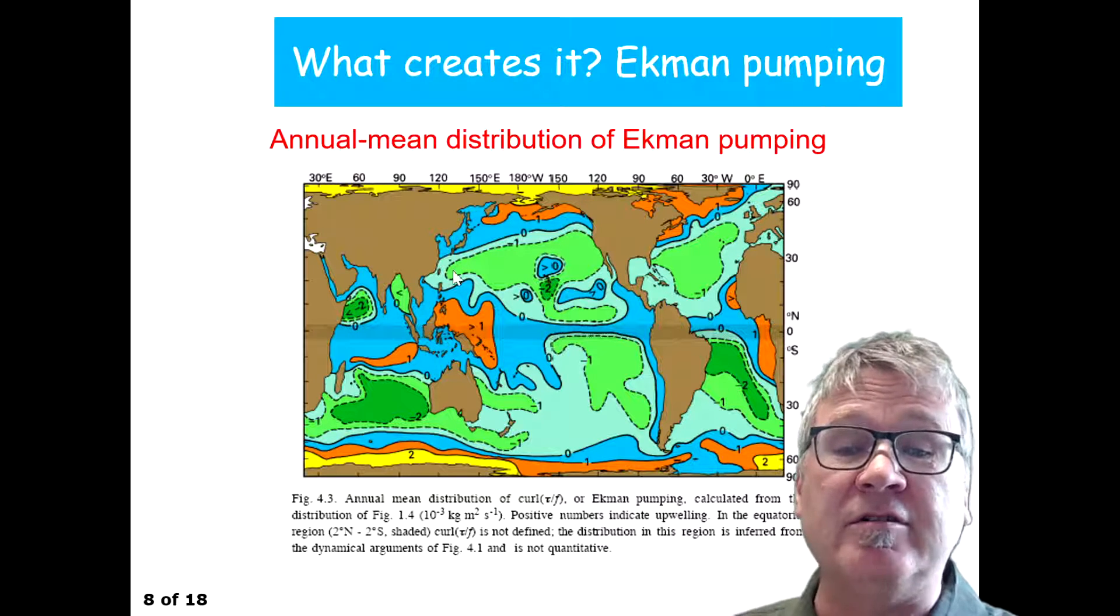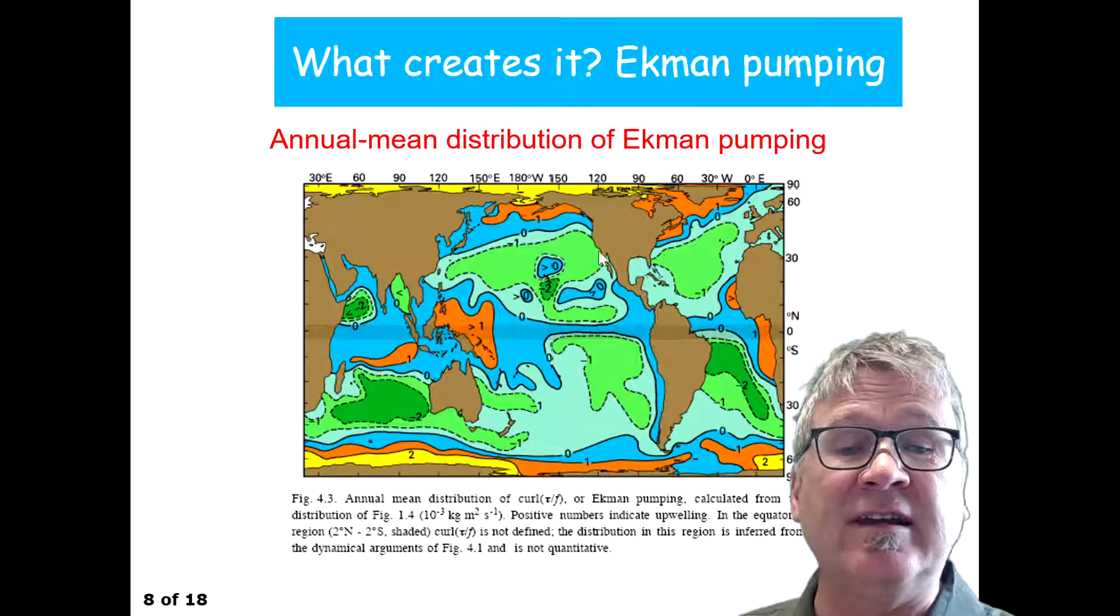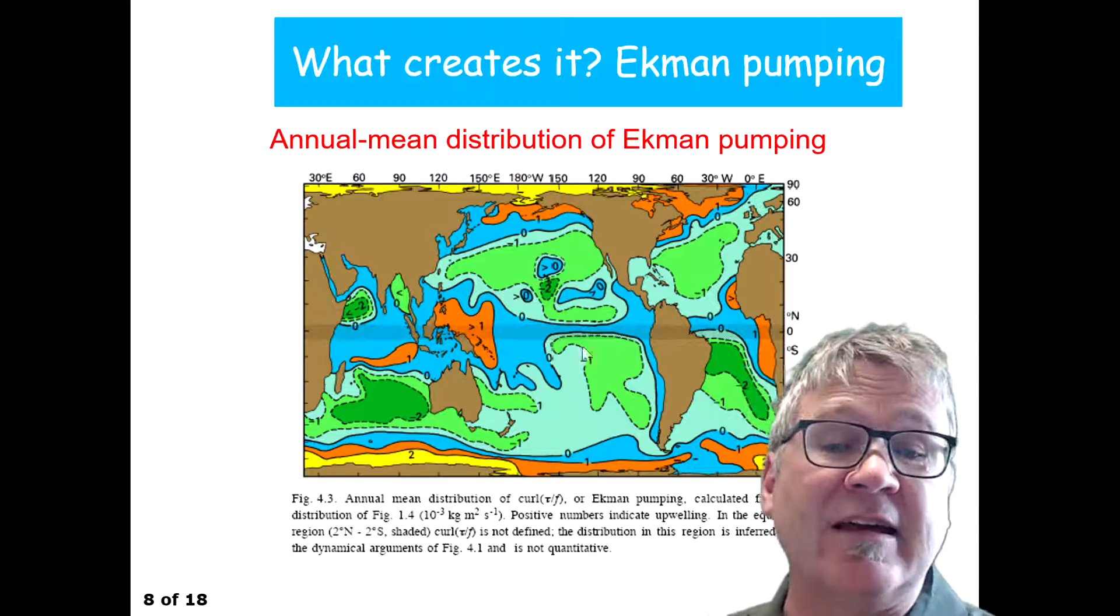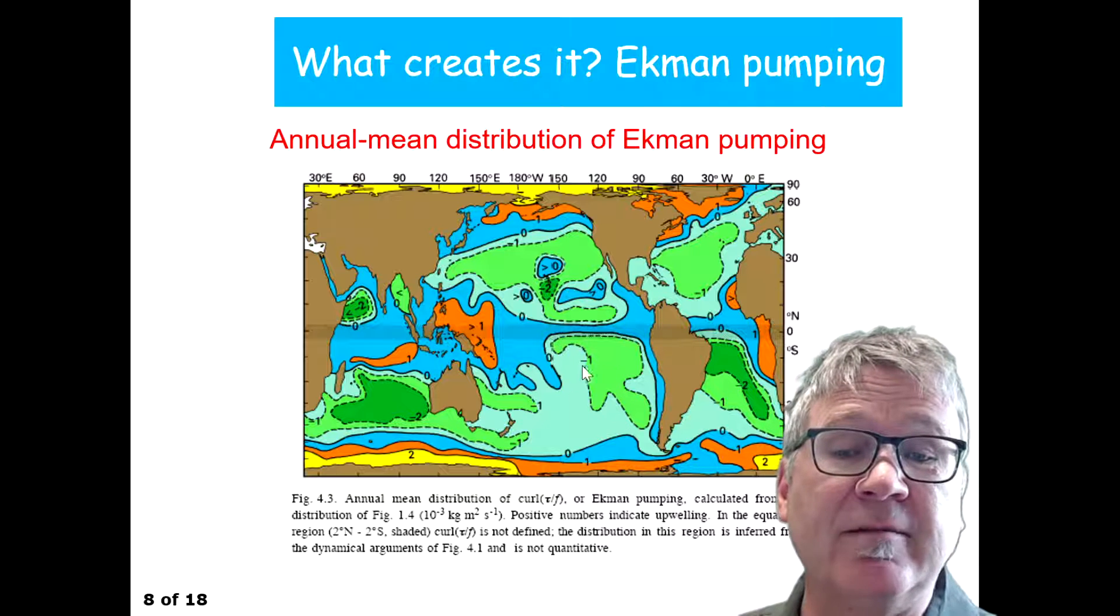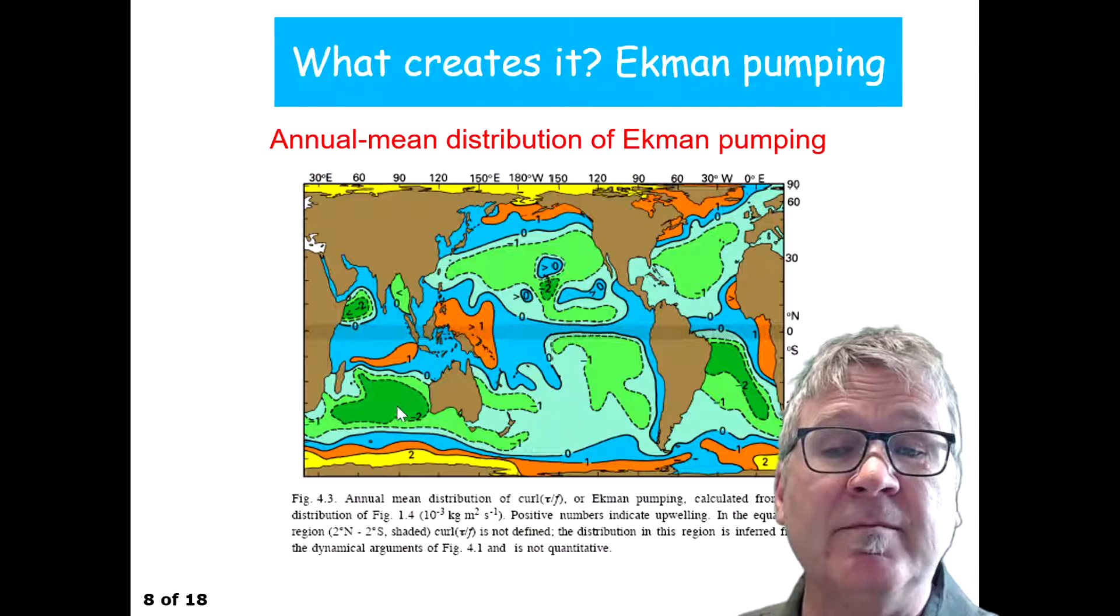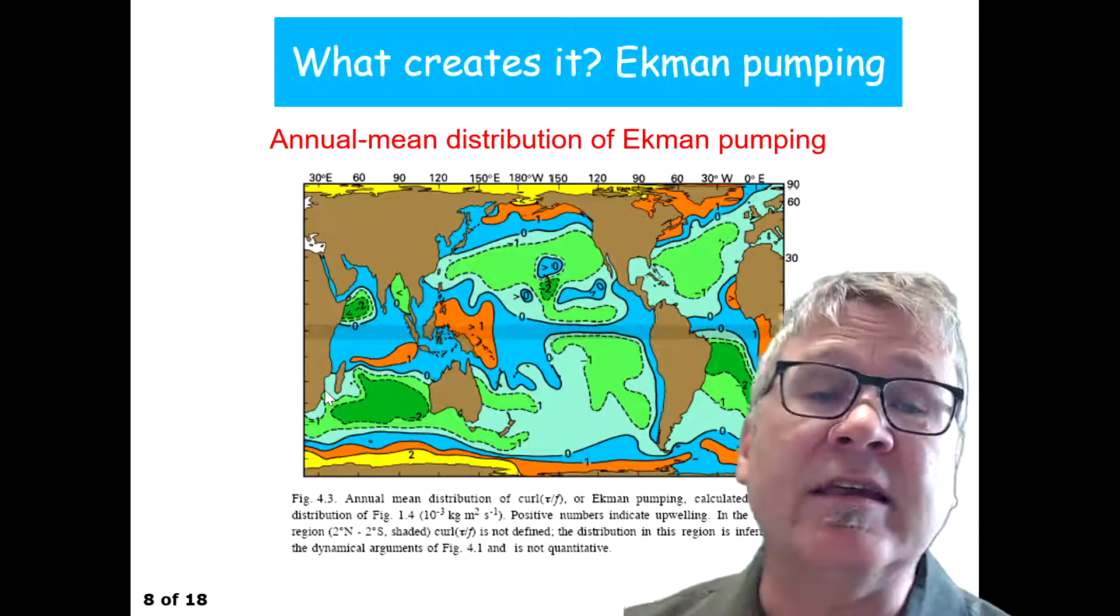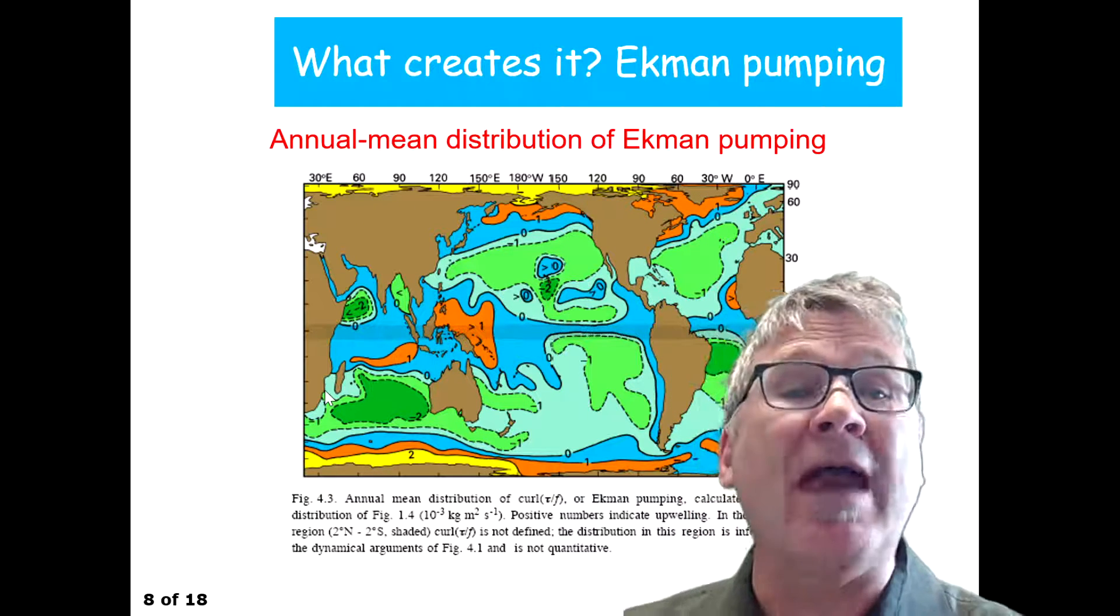these green regions, the green region here, green regions here, and these are actually what we call the subtropical gyres, the green region. Okay, so this is the component of the wind forcing that actually drives Ekman layers.